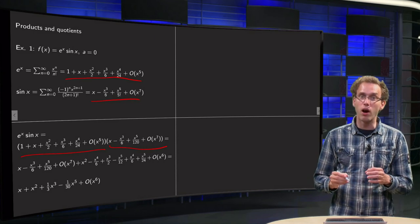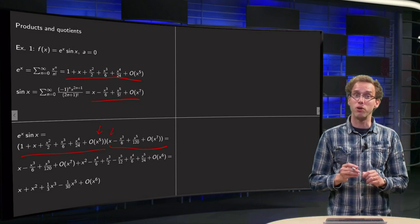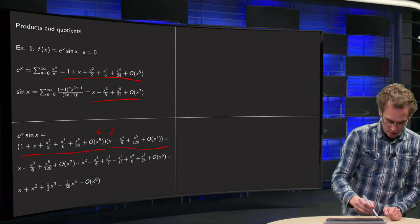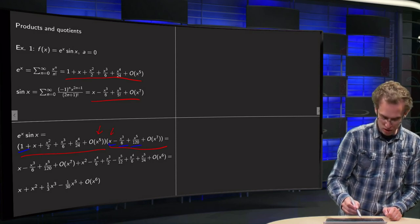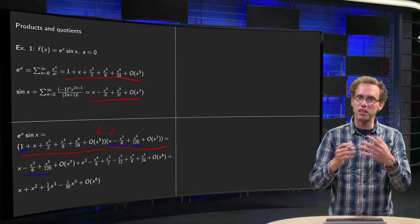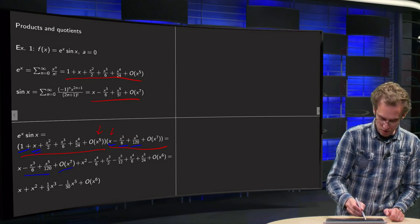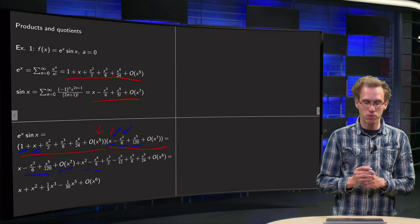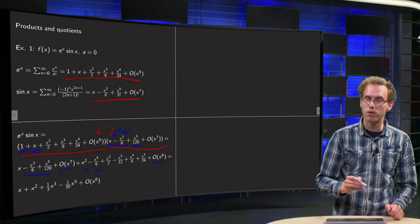We have e to the power x here and sine of x there. We are already neglecting order x to the power 5 times x, so we will be neglecting terms of order x to the power 6 and higher. Now we are going to do the multiplication. We have 1 times x minus x cubed over 6 plus x to the power 5 over 120, plus order x to the power 7. Since we already neglect x to the power 6, this is even smaller. Then we have x times x minus x to the power 4 over 6 plus x to the power 6 over 120, but that is order x to the power 6 so it is neglected.